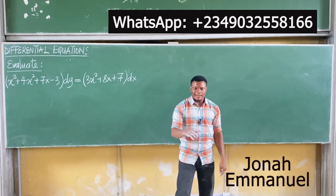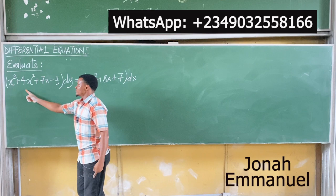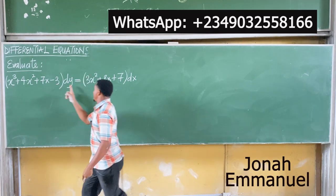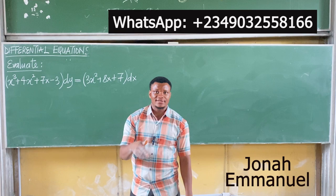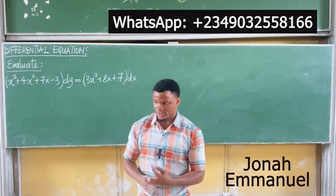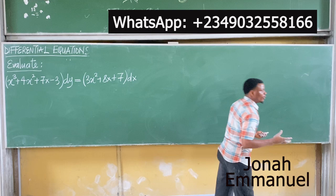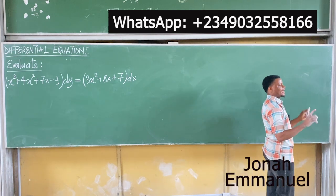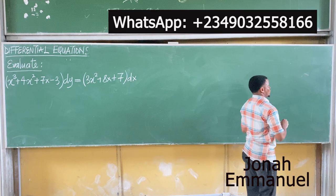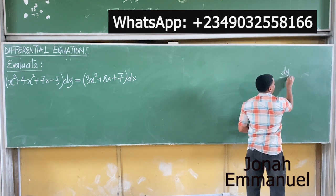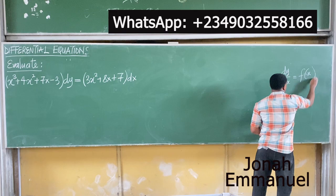Look at this function here. The first thing I would notice is that everything here is in terms of either x or a constant. So I'm using the direct integration method. If you recall the order or the form of a direct integration method, it was usually dy/dx, and this would be equal to a function in terms of x.